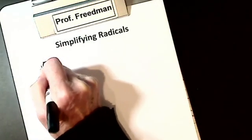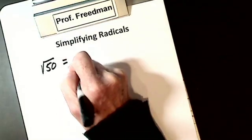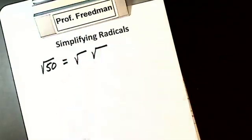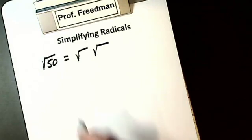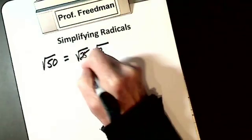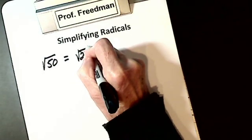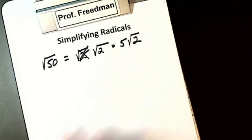Let's say I have the square root of 50. I break it down into two numbers that multiply together to give me 50, but one of them has to be a perfect square. If it's easier for you to write the perfect squares at the top of your page, do that. It's got to be 25 and 2. I take the square root of 25 — 5 comes out of the square root sign — so it's 5 the square root of 2.